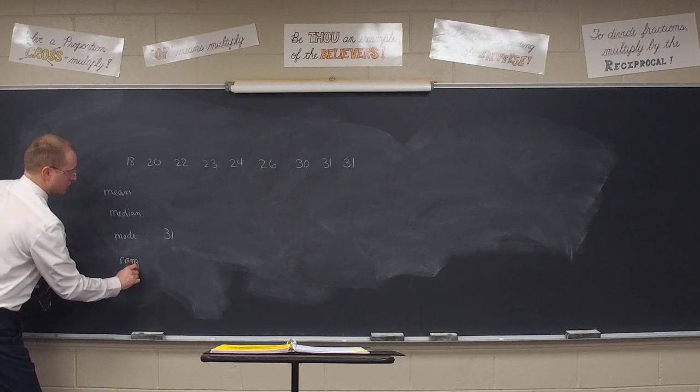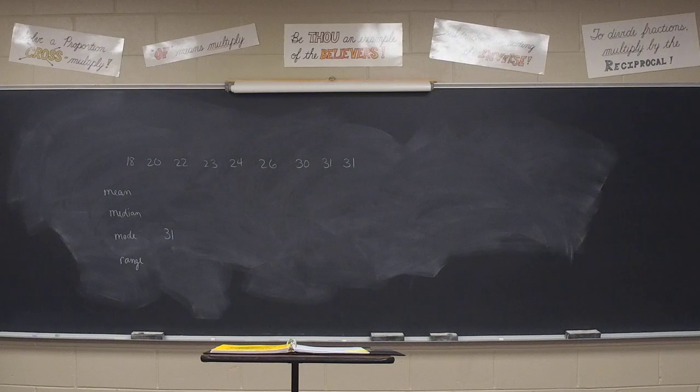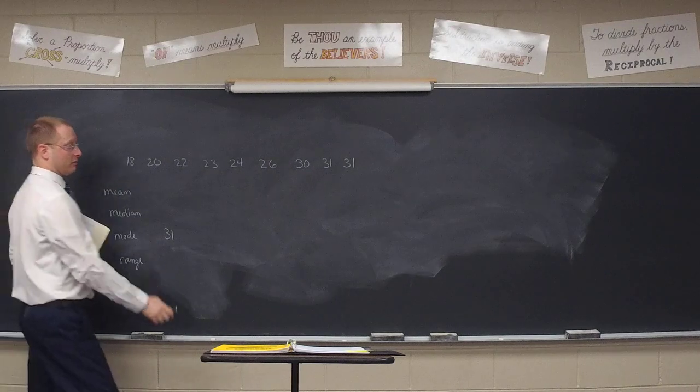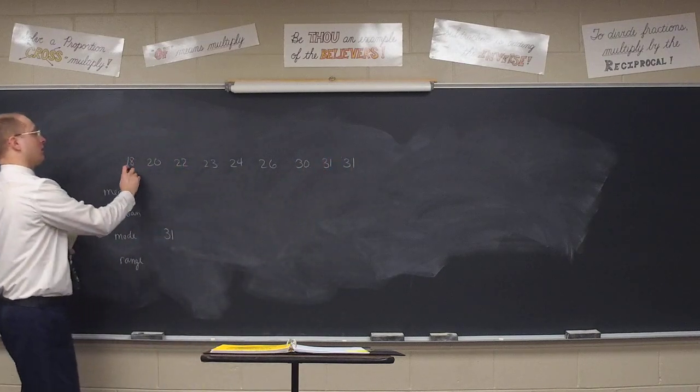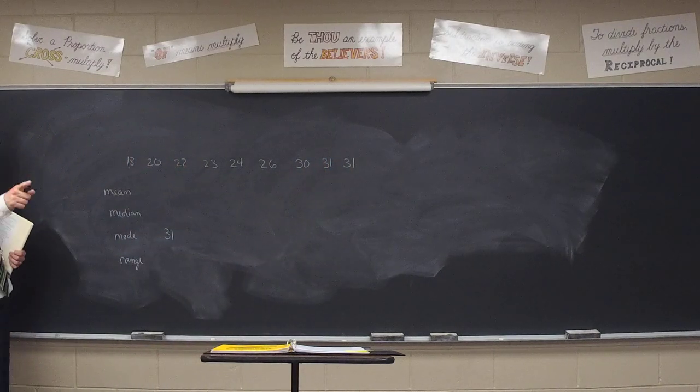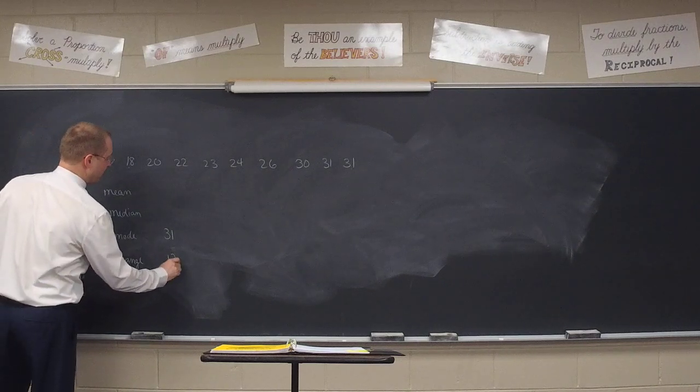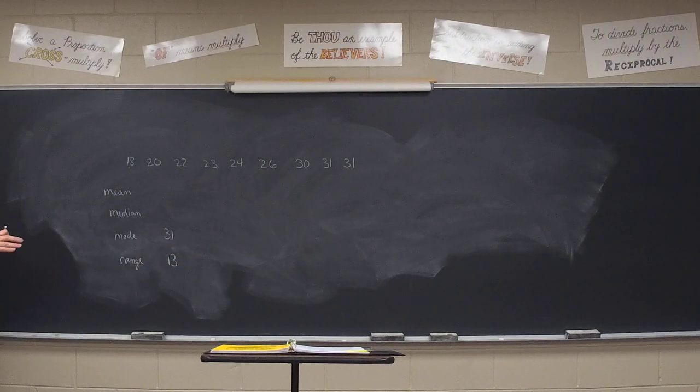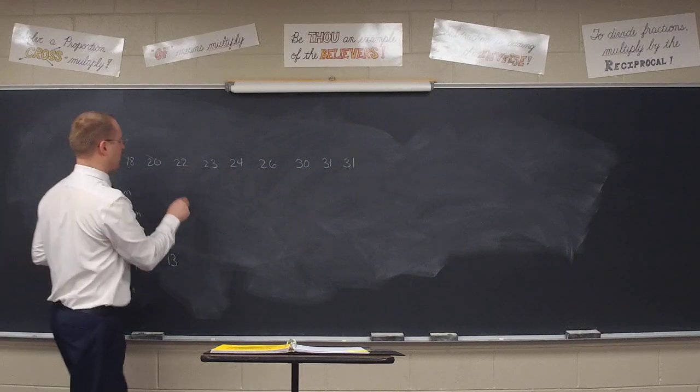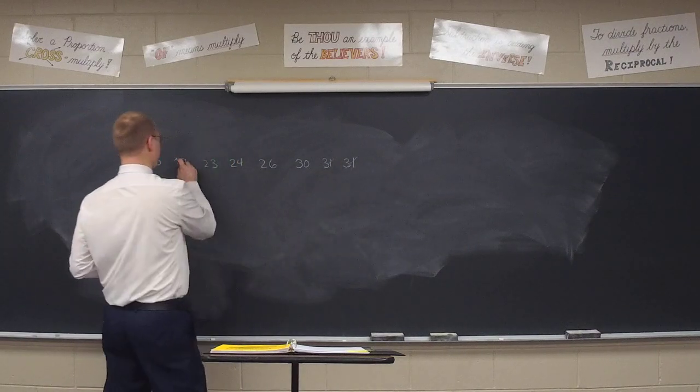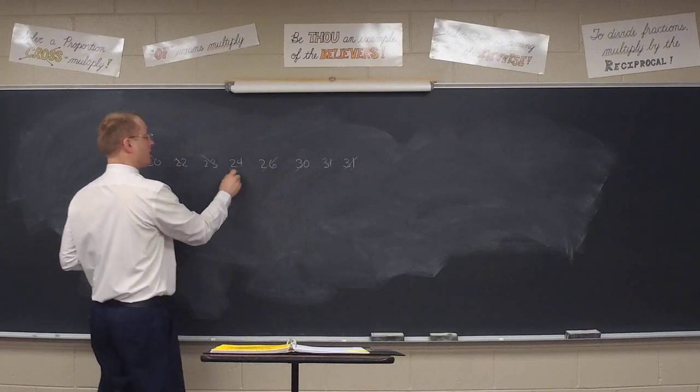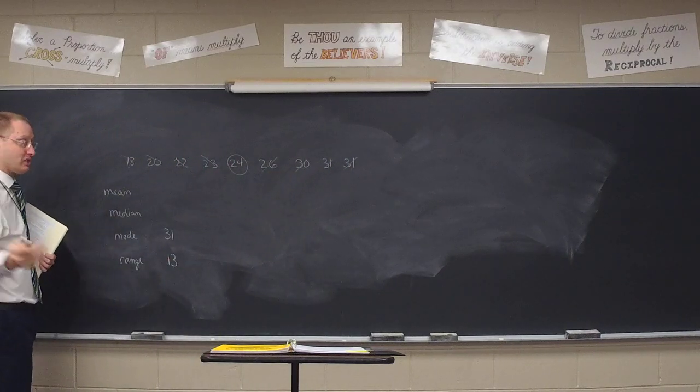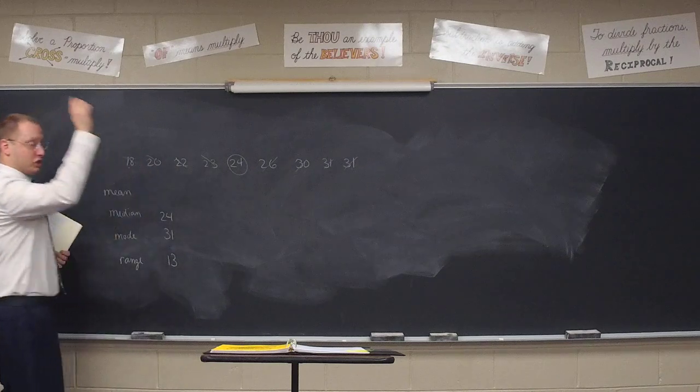Let's do the mode first. That requires no math. What is the mode here, Elaine? Thirty-one. It's the only number that occurs more than once. Now, class, does that mean that thirty-one is normal for this set of data? No, it's all the way on the high end, isn't it? So that's why the mode is not usually a good indicator of normal. It's not here. But there is still a mode of thirty-one. The range is the next easiest math, because all we have to do, class, is subtract. What two numbers, Elaine? Thirty-one minus eighteen. And when we subtract thirty-one minus eighteen, what is our range? Thirteen. So that's not too bad either. That just tells you how spread out the data is.